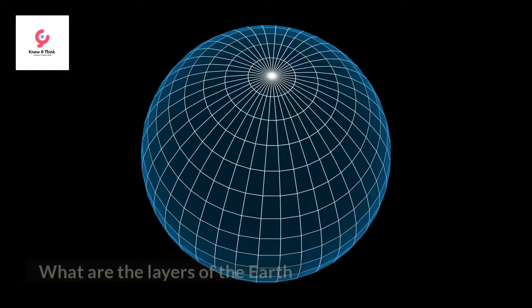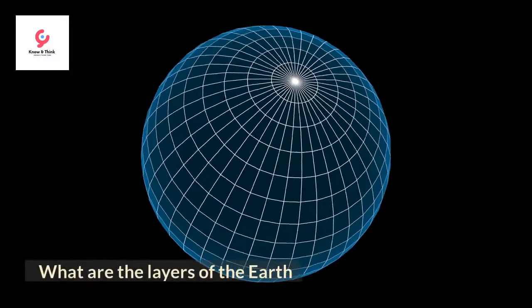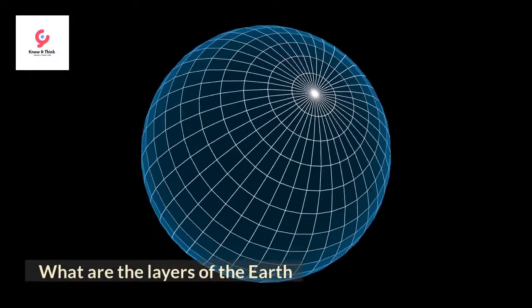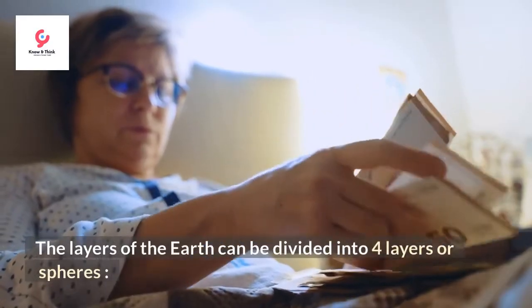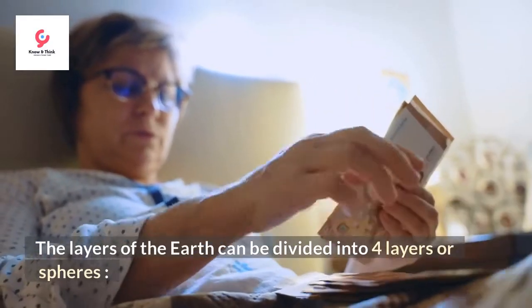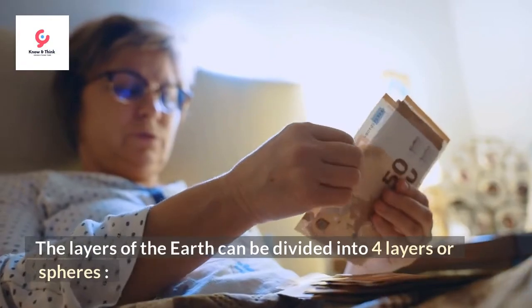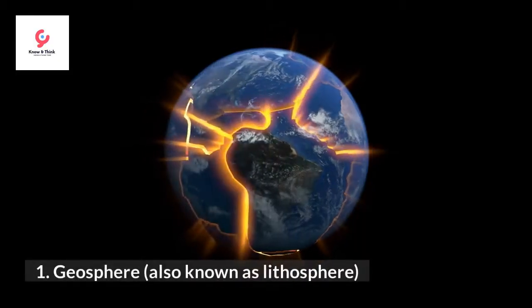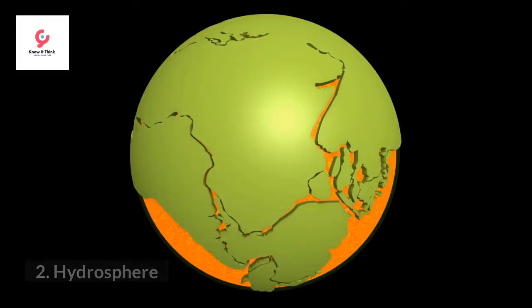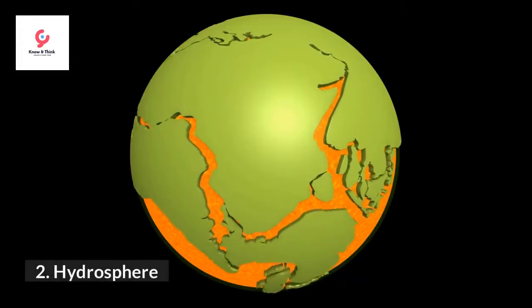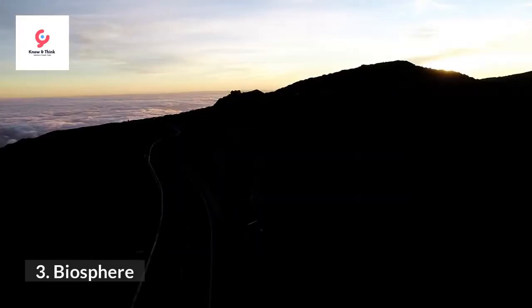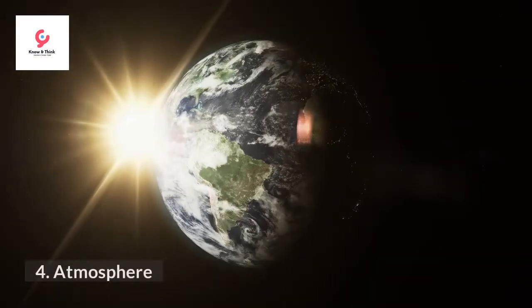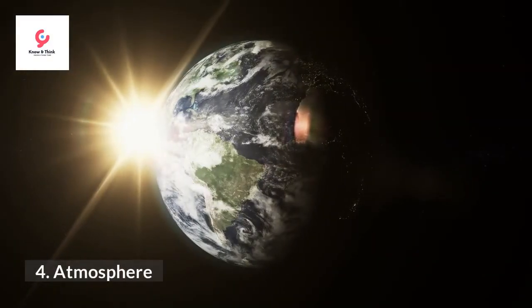What are the layers of the Earth? The layers of the Earth can be divided into four layers or spheres: the Geosphere, also known as lithosphere; the Hydrosphere; the Biosphere; and the Atmosphere.